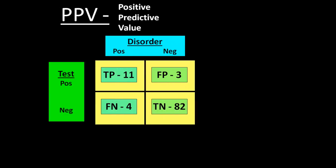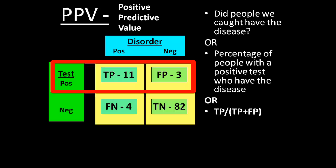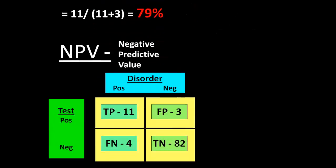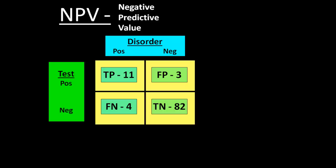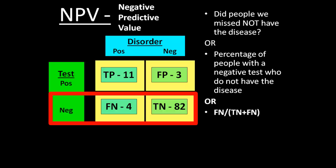Our next statistic is positive predictive value. If a test is positive, how sure can we be that the patient has the disease? It's the percentage of people with a positive test who have the disease — true positives divided by true positives plus false positives — and in this case it's 79%. The other version is negative predictive value: if a test is negative, how sure are we that the patient doesn't have the disease? It's the percentage of patients with a negative test who do not have the disease — true negatives divided by true negatives plus false negatives — and in our population it's 95%.